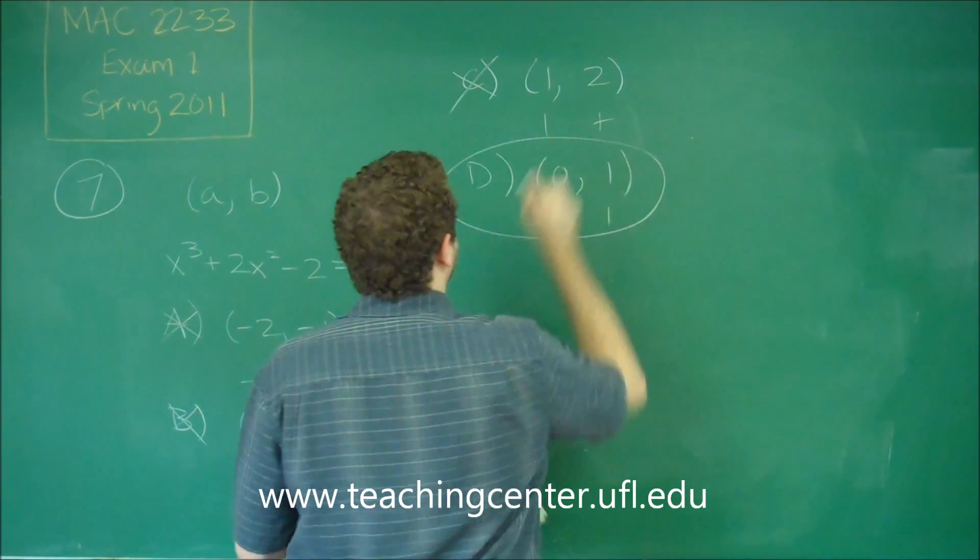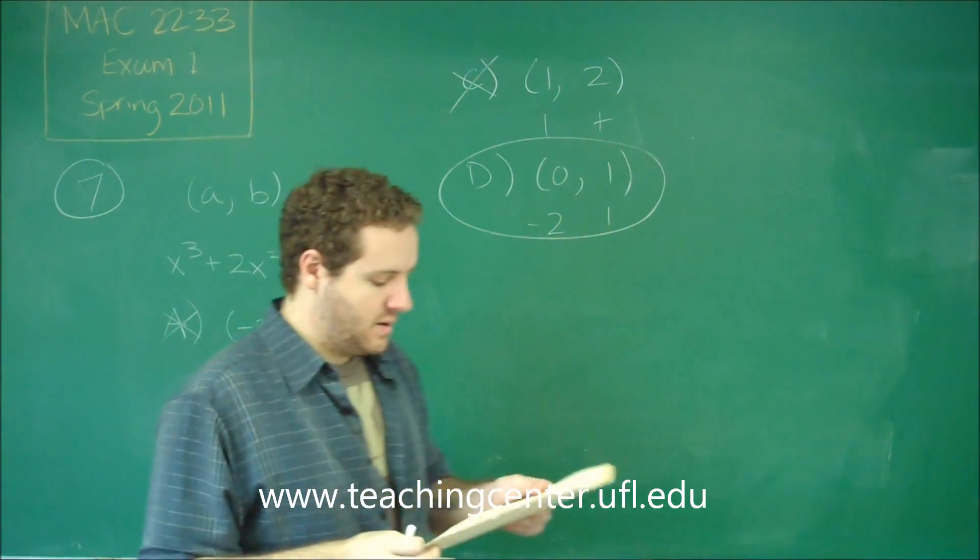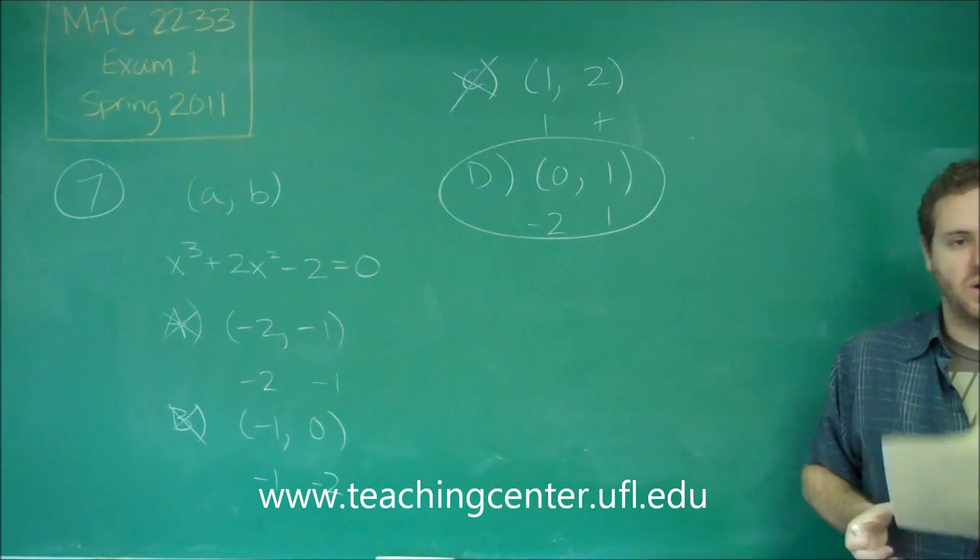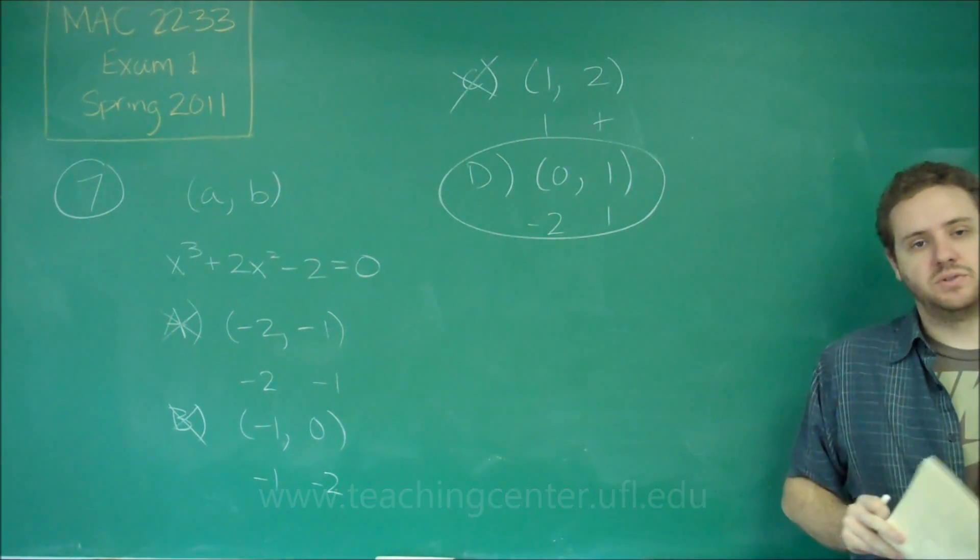That's exactly what we want. So answer choice D is the one that guarantees that this equation will have a zero in between those two numbers.